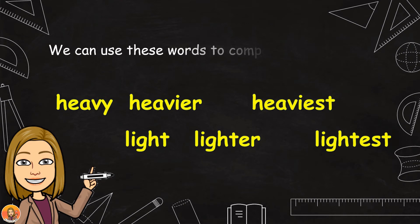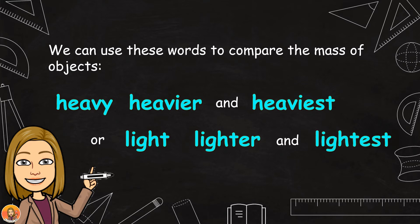We can use these words to compare the mass of objects. Heavy, heavier, and heaviest. Light, lighter, and lightest.